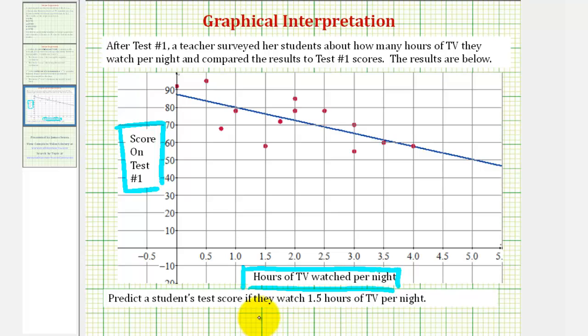We'll start by finding 1.5 on the x-axis, which represents the number of hours of TV watched per night, which would be here. And we'll go straight to the line of best fit, which would be here.